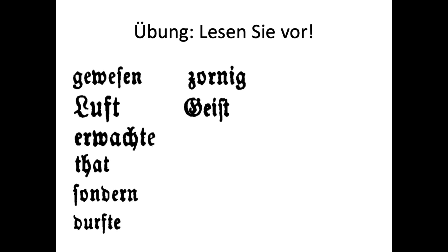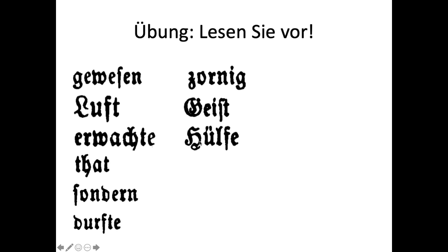Next: 'zornig' — Z, O, R, N, I, G — or 'zornig' depending on dialect. The Z looks like a little cursive z. Next: 'Geist' — G, E, I, S, T — we get the long S in there; it's tempting to mispronounce it, but it's 'Geist' with a long E. Get used to the capital G — it's very common in German. Next: 'Hülfe' — H, Ü, L, F, E — this is the old spelling; today it would be 'Hilfe' (H, I, L, F, E), meaning help.